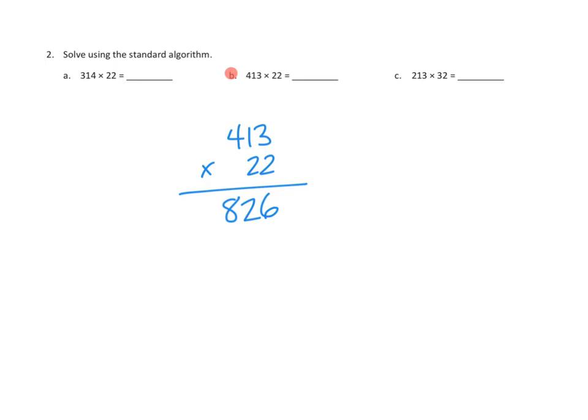Now we're going to do the very same thing here, but this time we're going to be multiplying by 2 10s instead of 2 1s. So 2 10s times 3 would be 60, or 6 10s.